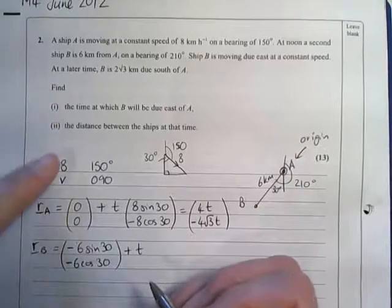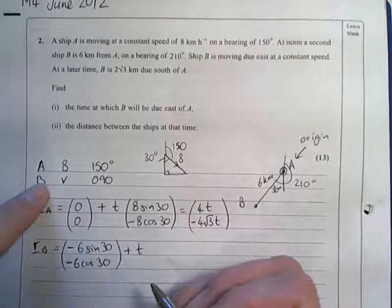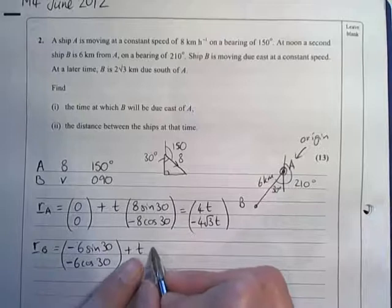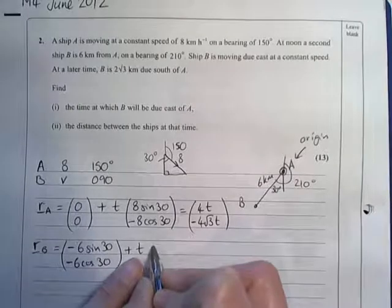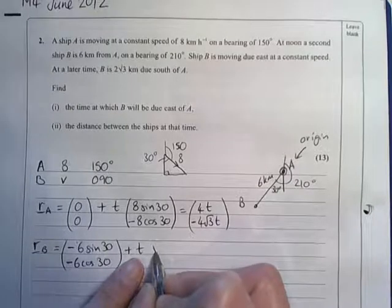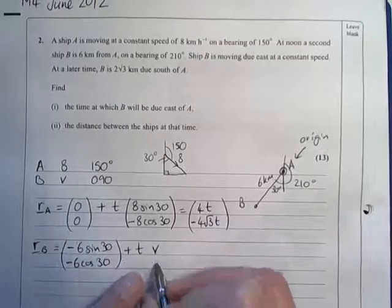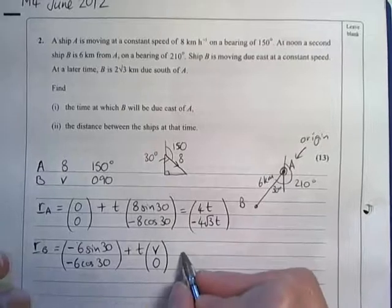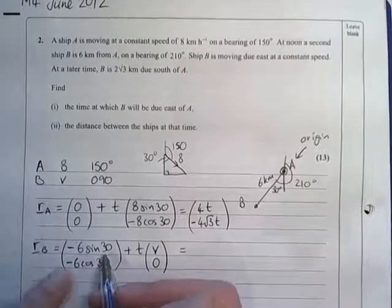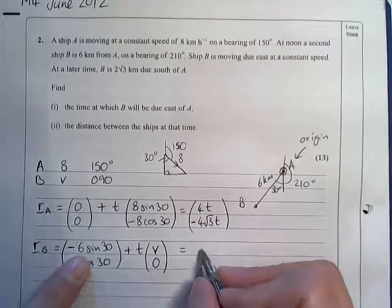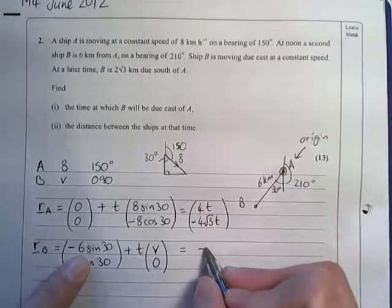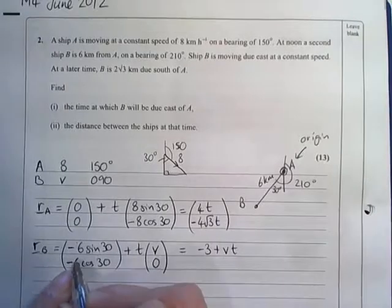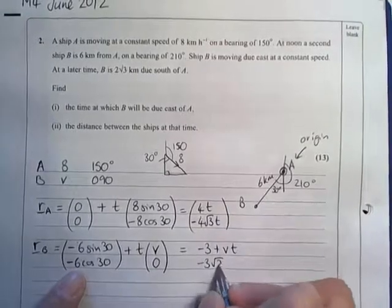However, because we know that B is moving due east, that means it's only going to have an I component of whatever this speed is, and it will have no J component. So simplifying B's velocity, I get half of negative 6, which is negative 3, plus Vt in the I direction, and in the J direction I just get negative 3 root 3.